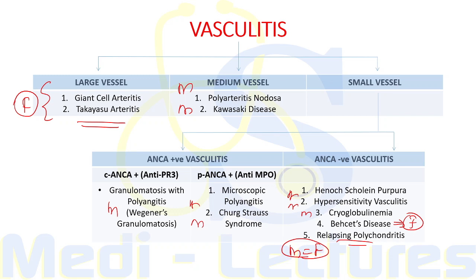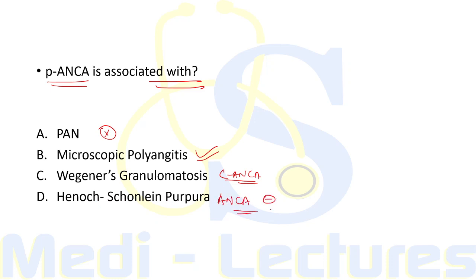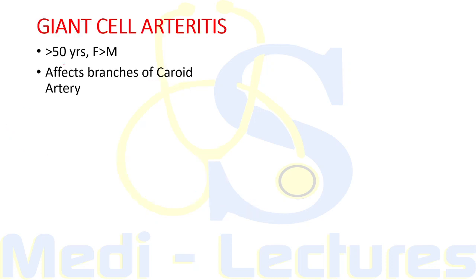Practice question: P-ANCA is associated with which condition? Options include Polyarteritis Nodosa (medium vessel vasculitis), Microscopic Polyangiitis, Wegener's (C-ANCA), and HSP (not associated with ANCA). The correct answer is Microscopic Polyangiitis.